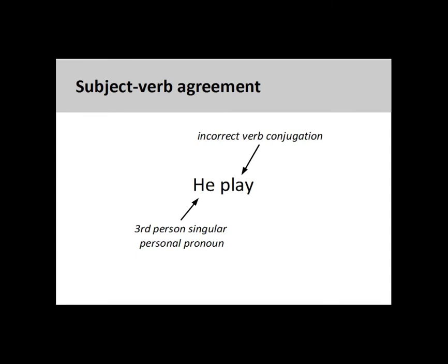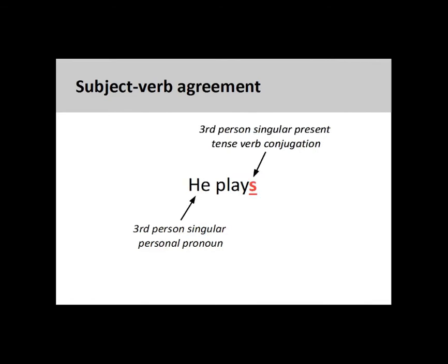When conjugating verbs, it is important to maintain agreement between the subject and the verb. That is to say, the verb must agree with the subject both in number and person. In the sentence you see on the screen, the third person singular personal pronoun 'he' is paired with an incorrect verb conjugation, 'play.' This makes the sentence sound awkward. English adds an S to the verb in order to make a third person singular verb conjugation, and this agreement between the subject and the verb makes the sentence sound much better.